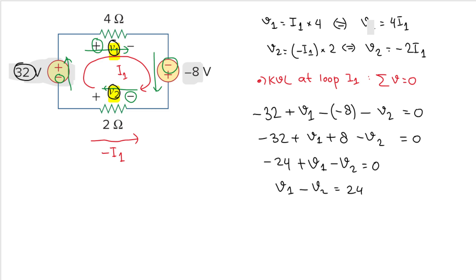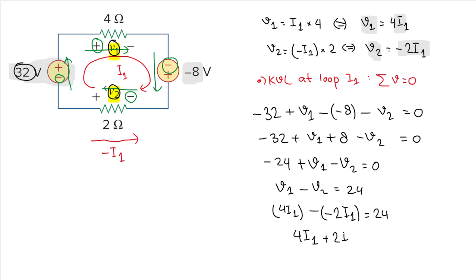We know that v1 equals 4i1 and v2 equals minus 2i1, so substituting: 4i1 minus (minus 2i1) equals 24. The two negatives give us 4i1 plus 2i1 equals 24, so 6i1 equals 24.